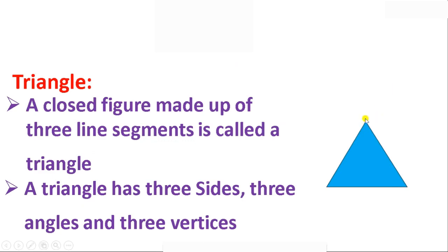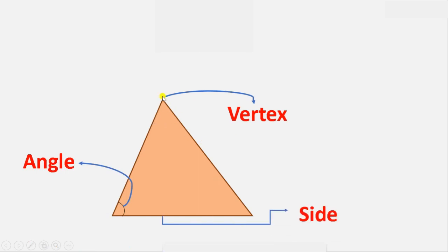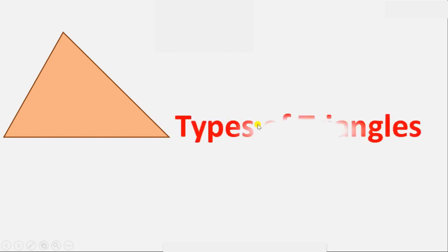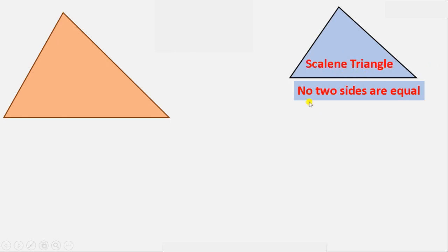So here we have the vertex, sides, and angles of a triangle. A triangle has three vertices, three sides, and three angles.